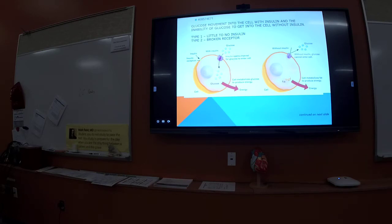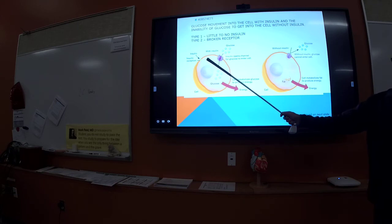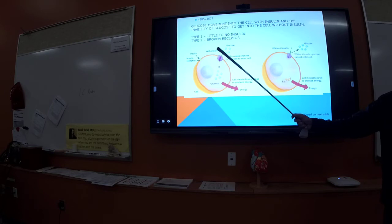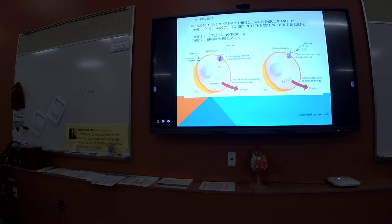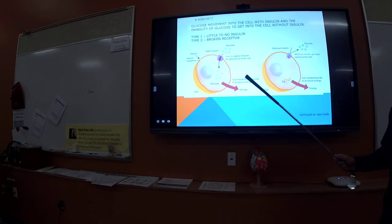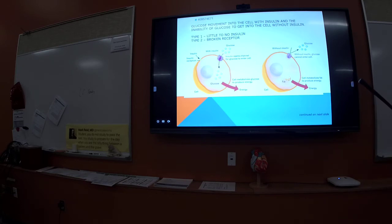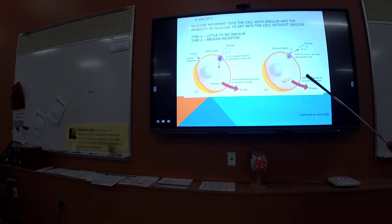With diabetes we have a couple of problems. In type 1 diabetes the pancreas produces little to no insulin, so there's a lack of insulin to open up those receptors on the cell — the patient has to take insulin. In type 2 diabetes the receptor is broken somehow, so the patient may still need insulin to increase receptor sensitivity, or take other medications. Many type 2 diabetics control their diabetes with diet and exercise.